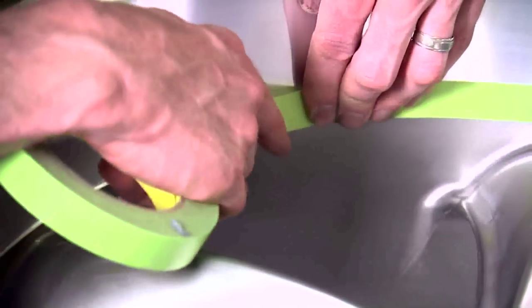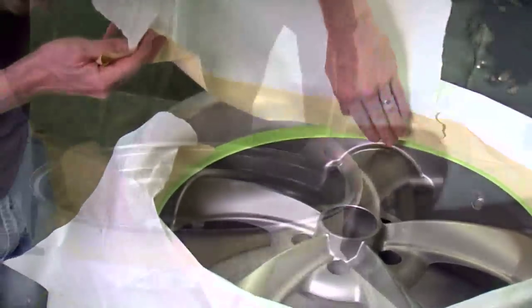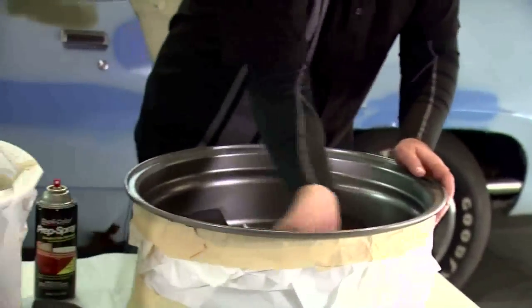We only want to paint the spoke area in the satin black, so we'll be taping off this polish area here to not allow any paint to get there. We're going to make sure that we prep spray these to clean them and get ready for a fresh coating.